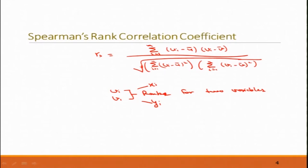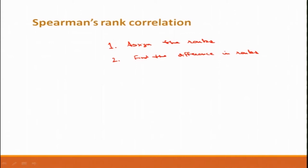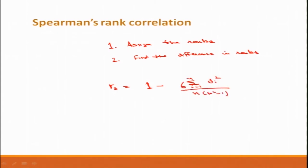There are certain steps: first, we assign ranks to our data; then we find the difference in ranks; and using the formula mentioned, we find Spearman's rank correlation. Also, if u_i and v_i are integers, Spearman's rank correlation can be given by a simplified relation where d_i is the difference in ranks.